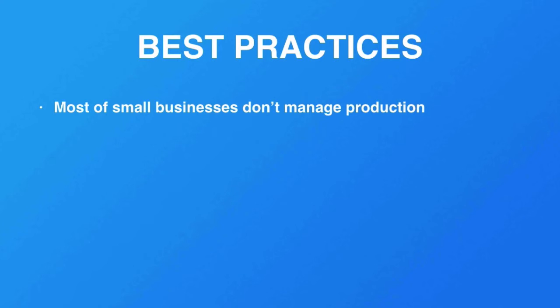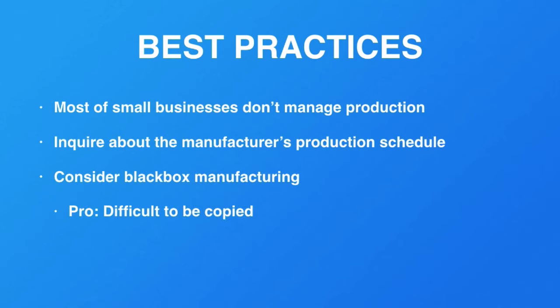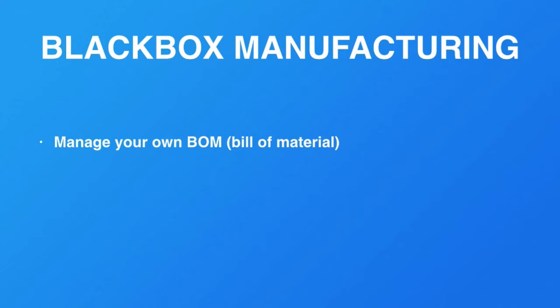What you want to do is inquire about your manufacturer's production schedule. For black box manufacturing, you want to make sure it's difficult to be copied. It is a little more complicated, but it can be done and it doesn't have to be very complicated. Here are some of the basic steps to follow: you want to make sure that you manage your own bill of materials — in short, call it BOM.